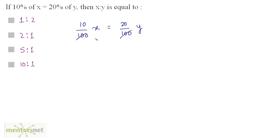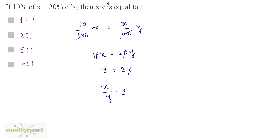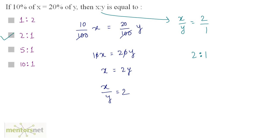The 100s cancel out, so we have 10x is equal to 20y. The zeros cancel out, giving x is equal to 2y, and x by y is equal to 2. This ratio x is to y is 2 by 1, so 2 is to 1 is the ratio. Option B is the correct answer.